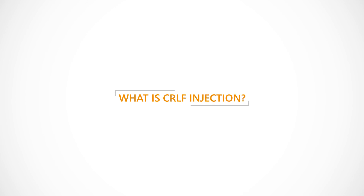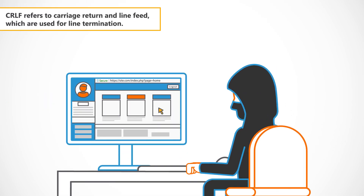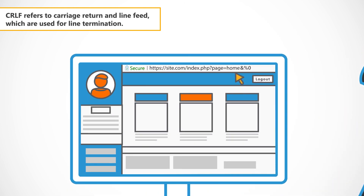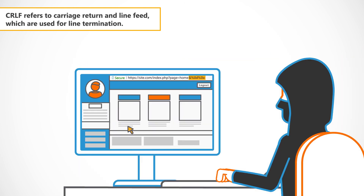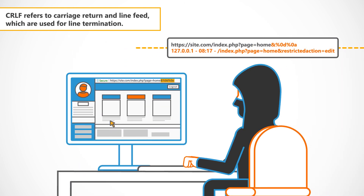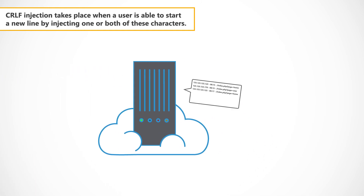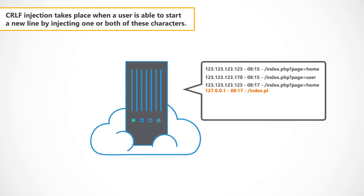What is CRLF injection? CRLF refers to carriage return and line feed, which are used for line termination. CRLF injection takes place when a user is able to start a new line by injecting one or both of these characters.